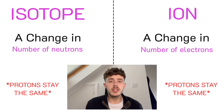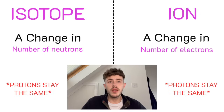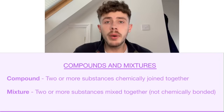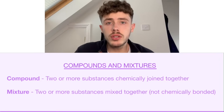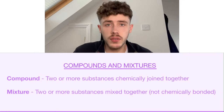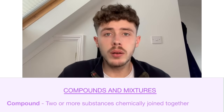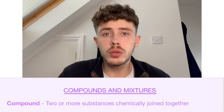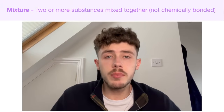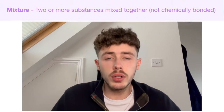If the atom has had some changes made to it, such as the number of electrons or neutrons, this becomes either an isotope or an ion. Compounds and mixtures are very similar, but do have some distinct differences. Compounds are when particles are chemically joined together, and a mixture is simply when the particles just exist together.